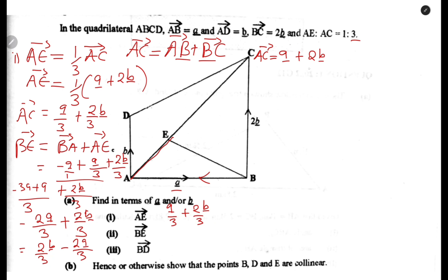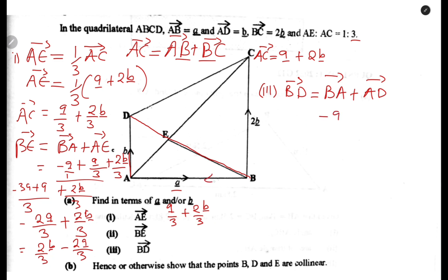That is our BE. Now we come to the last part, which is BD. For BD, we can add BA and AD. So BD equals BA plus AD. BA is negative a because we are going in the opposite direction, then plus AD which is b. So BD equals negative a plus b, which we can rearrange as b minus a.